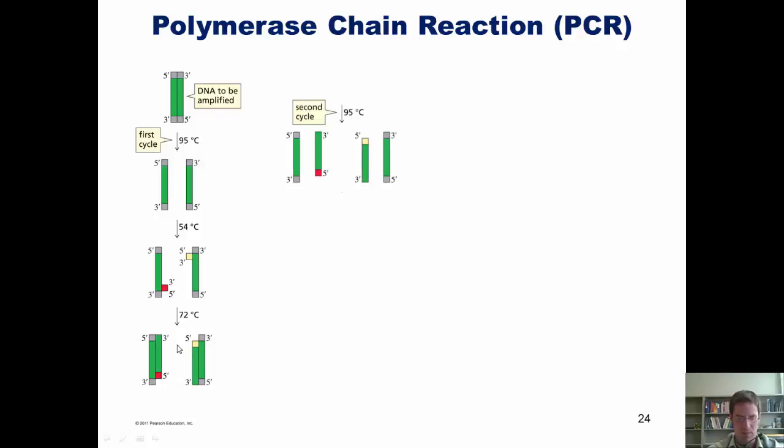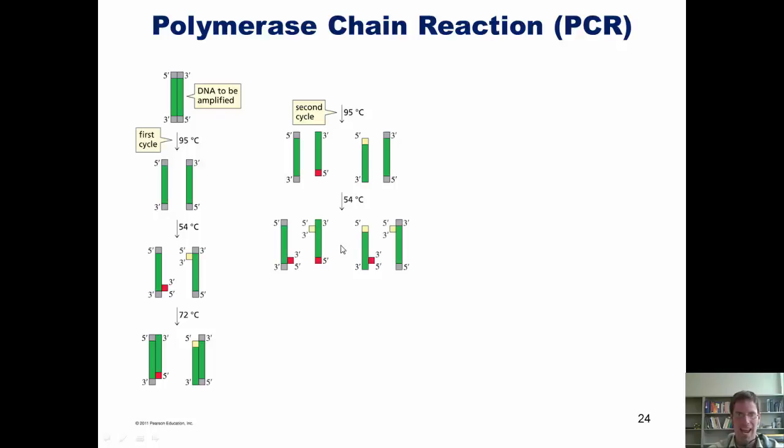We now heat the mixture up again and break apart and separate all four of these strands from each other. The process is now repeated, ultimately giving eight complementary strands, which are then subjected again to the same cycle.